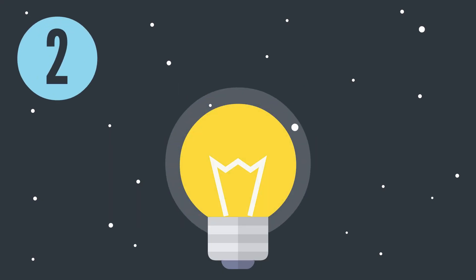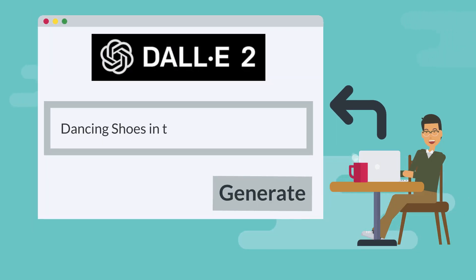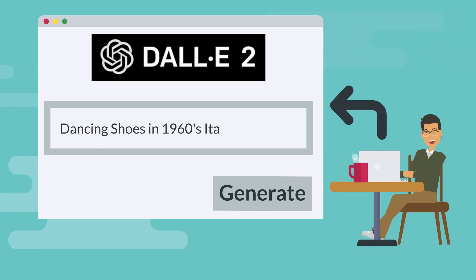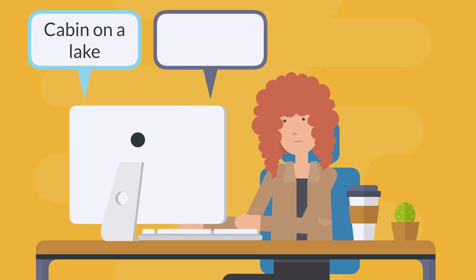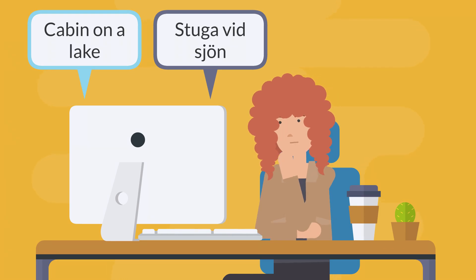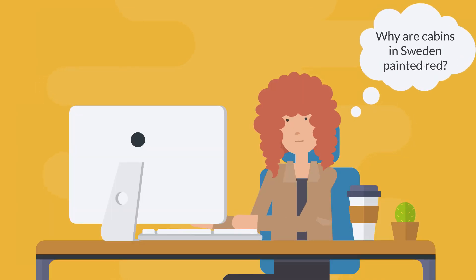Idea number two: compare and contrast images across languages or time periods. Ask the AI to generate images from two time periods that are relevant to your target language study and compare and contrast these images. Or provide the same input but in two different languages and see if the language seems to impact the output at all. After comparing and contrasting, form hypotheses of why the differences might be there and investigate with some research.